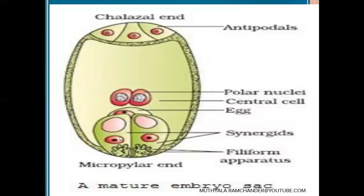Near the egg apparatus, two cells are present called the secondary nucleus. The two nuclei may be fused or in individual positions and are called polar nuclei. One polar nucleus comes from the chalazal end, and the other comes from the micropylar end of the embryo sac. They are present at the center region of the embryo sac, which is also called the central cell, and within it the secondary nucleus is present containing the two polar nuclei.